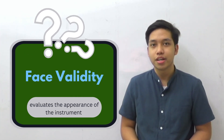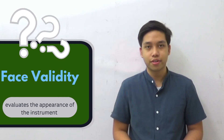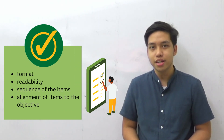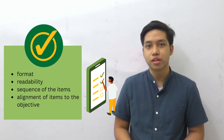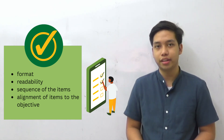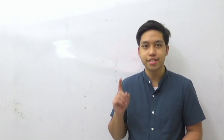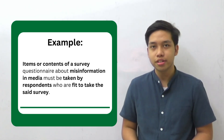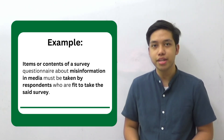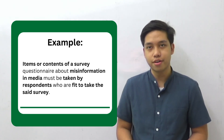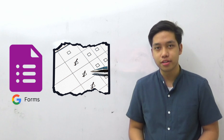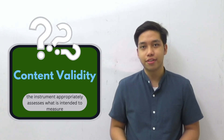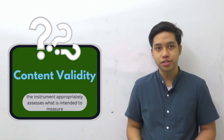Now let's proceed on how they will check your research instrument. First is face validity — it evaluates the appearance of the instrument itself, for example the format, readability, sequence of the items, and so on. It also validates if the content is related to the objective. For example, the items of a survey questionnaire about misinformation in media must be taken by respondents who are fit to take the same survey. Researchers should also check the overall appearance of the survey questionnaire whether it is online or printed.